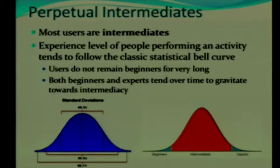Perpetual intermediates. You want to remember most users are intermediates. So if you're a beginner at a program and you're working to learn it, how long do you think you're going to remain a beginner? Not very long, right? Eventually you become an intermediate. So experience level of people performing an activity tends to follow what's called the classic statistical bell curve.